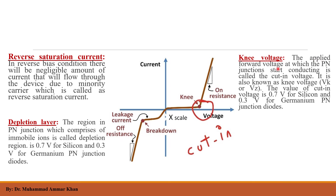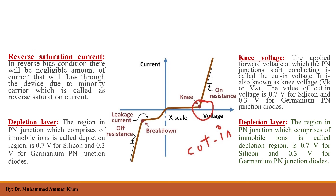The applied forward voltage at which the P-N junction starts conducting is called the cut-in voltage. For silicon diodes it is 0.7 volts, and for germanium diodes it is 0.3 volts. Once this voltage is reached, the current increases rapidly. The depletion layer is the region in the P-N junction which comprises immobile ions.